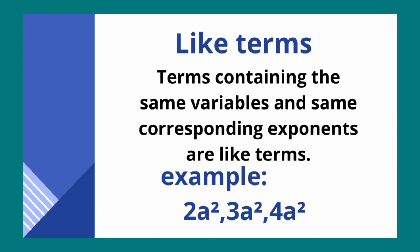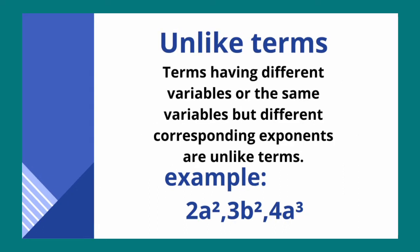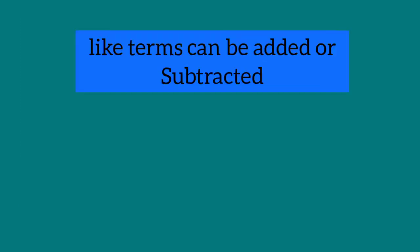Two or more terms which have the same variable and same exponent are called like terms. Here, 'a square' is the same in all terms, that's why these are like terms. And unlike terms have different variables with different exponents or powers — a square, b square, and a cube are different, that's why these are unlike terms.